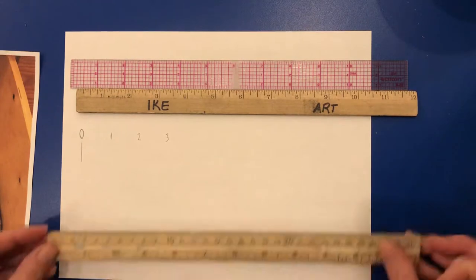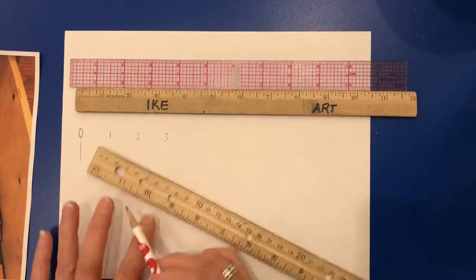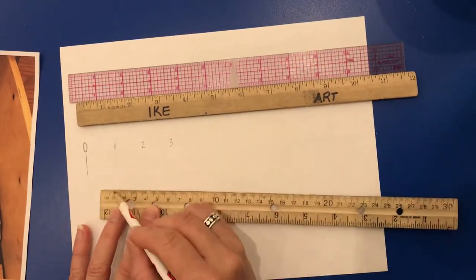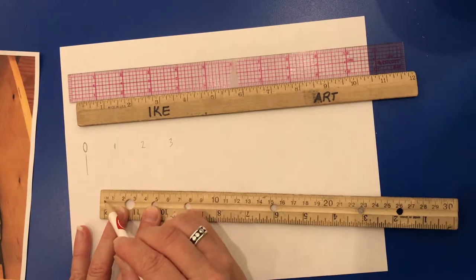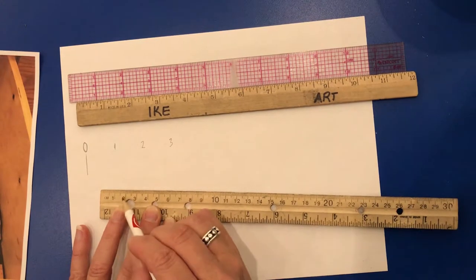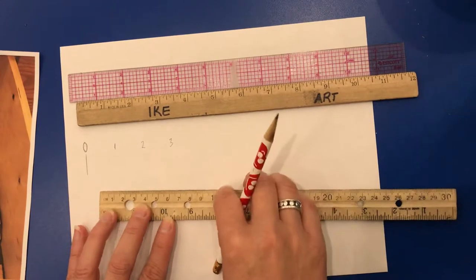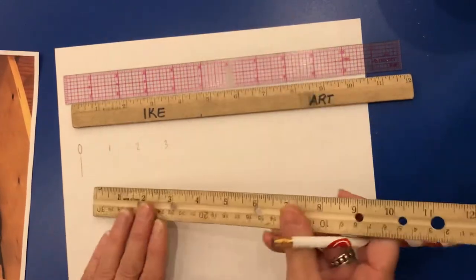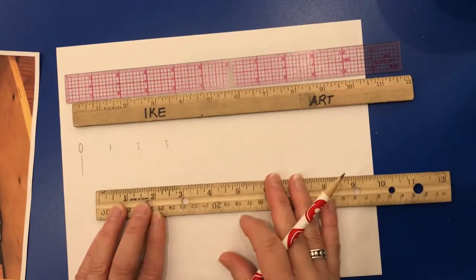We also have rulers that have centimeters. So if you can see the CM right here, that means centimeters. We don't use the centimeter side, we always use the inch side. So we want to flip our ruler and make sure we're using the inches.